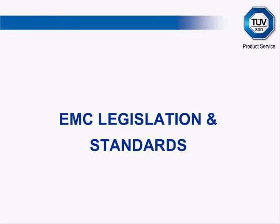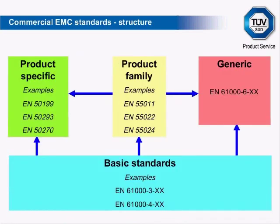A brief look at EMC legislation and standards. Commercial standards are organised into four main categories. Basic standards generally specify test methods and are independent of any particular product. The EN 61000-3 series of low frequency standards include limits and are harmonised. The EN 61000-4 series specify test methods but are not harmonised. Generic standards are related to a particular environment — either residential, commercial and light industrial, or general industrial — and can be used if no product family or product-specific standard is available.